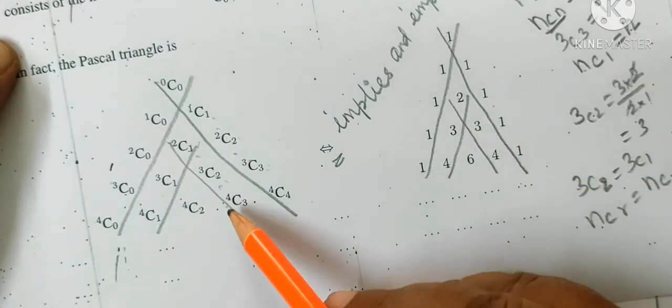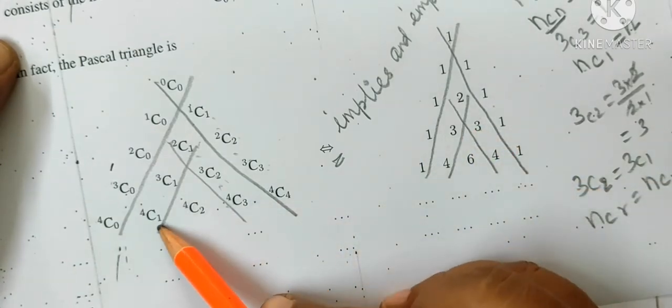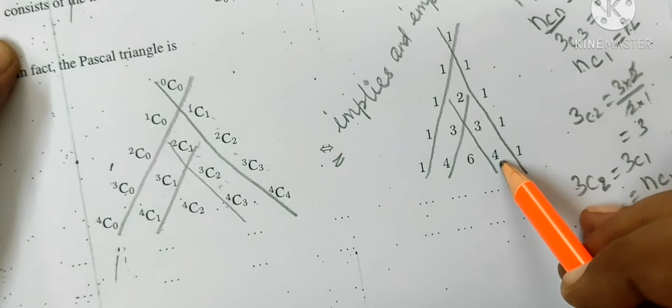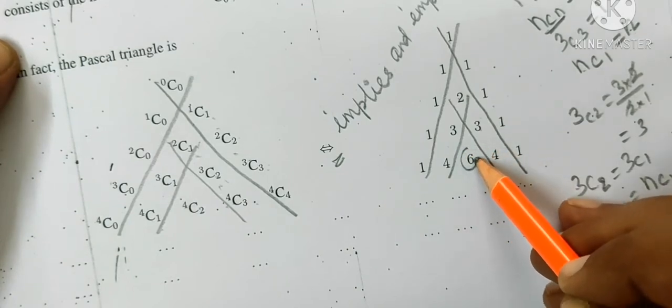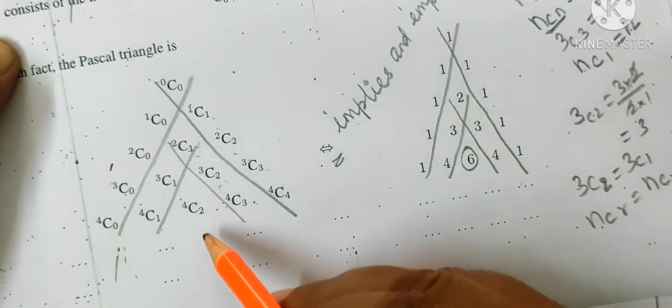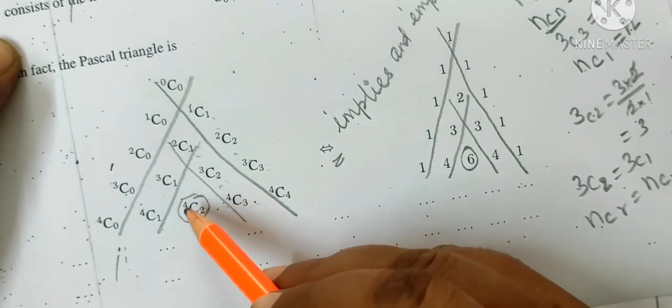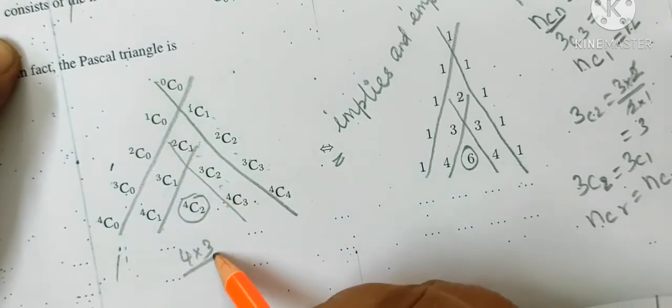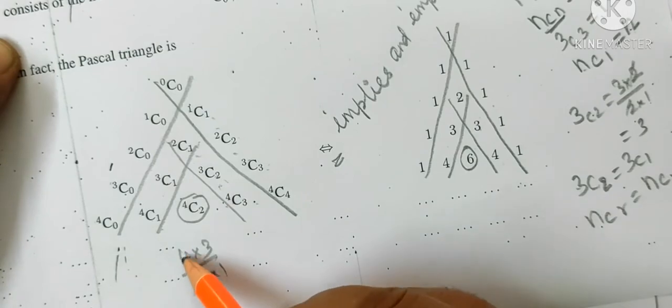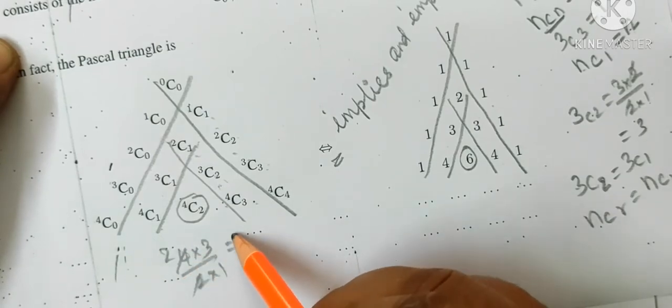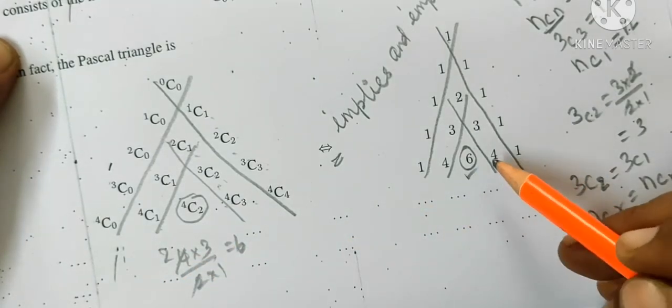This formula is equal to 3c2 and 3c1. The answer is equal to 4c3 and 4c1. The answer is equal to 4c2. This is equal to 6. 4c2 equals 4 into 3 by 2 into 1, which equals 6.